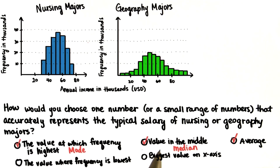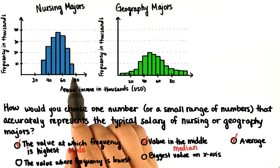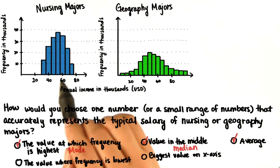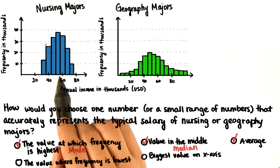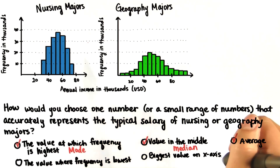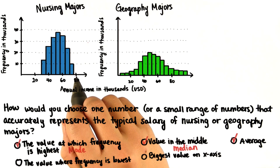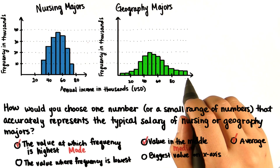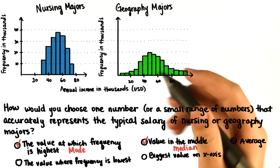The value where the frequency is the lowest — in this case, it's right here — and it looks to be about 72 or 75. This most definitely would not represent the whole distribution, where there are a lot of scores more towards 50. And the biggest value on the x-axis is here at about 75. Here, probably the biggest value is somewhere around 90, and that doesn't represent the whole distribution either.